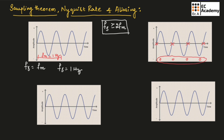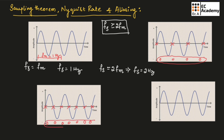If we consider Fs equal to 2Fm, then the sampling frequency Fs will be equal to 2 Hertz. After sampling, we will obtain samples at these points, and again we will get the sampling values as 0, 0, 0, 0, 0 and 0. Using these samples, we again cannot reconstruct an analog signal.